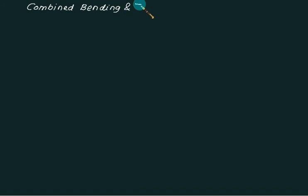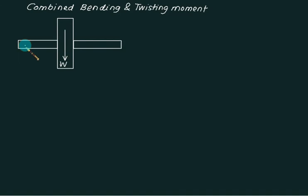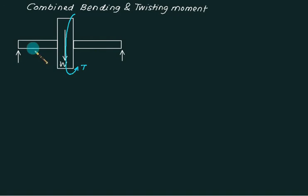Combined bending and twisting moment. Consider a flywheel of weight W mounted on a shaft, placed between two supports. Since it is a flywheel it will rotate, applying torque. If you consider only the weight it is a simply supported beam with a point load at center, so the beam is subjected to bending. Thus we have a combined condition of bending and twisting moment.